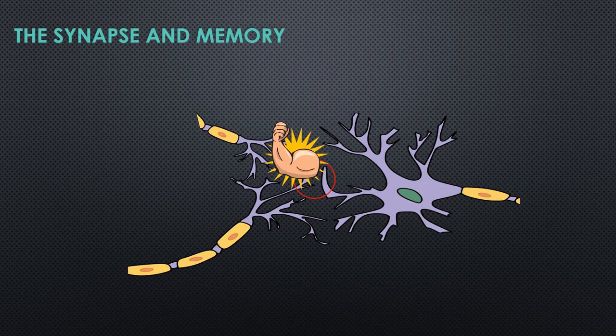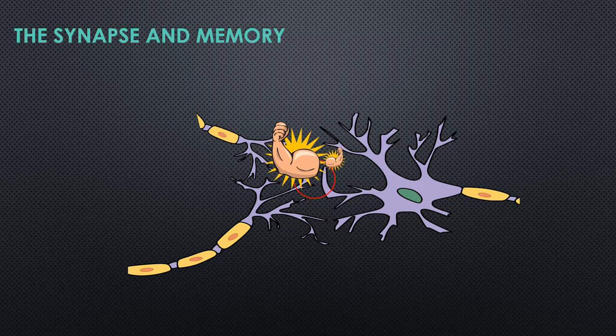We've looked at making the entrance to that synapse stronger, which makes the synapse and therefore the memory stronger overall. However, we also need to make the exit to that synapse stronger. If we relate this to a corridor — making the entrance bigger lets more people in, but if you don't make the exit bigger, you're still only going to have the same amount leaving. So we need to make the exit stronger too. The only way to make the exit stronger is to be trying to use that information — actually thinking about it, answering questions — so that the exit to the synapse gets stronger and stronger.